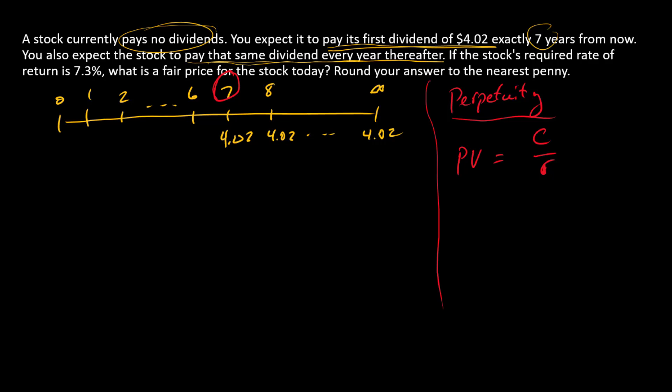Since the first cash flow happens in year seven, this is going to be a PV at time six. So any calculations we do in our initial step are going to get us to time six.